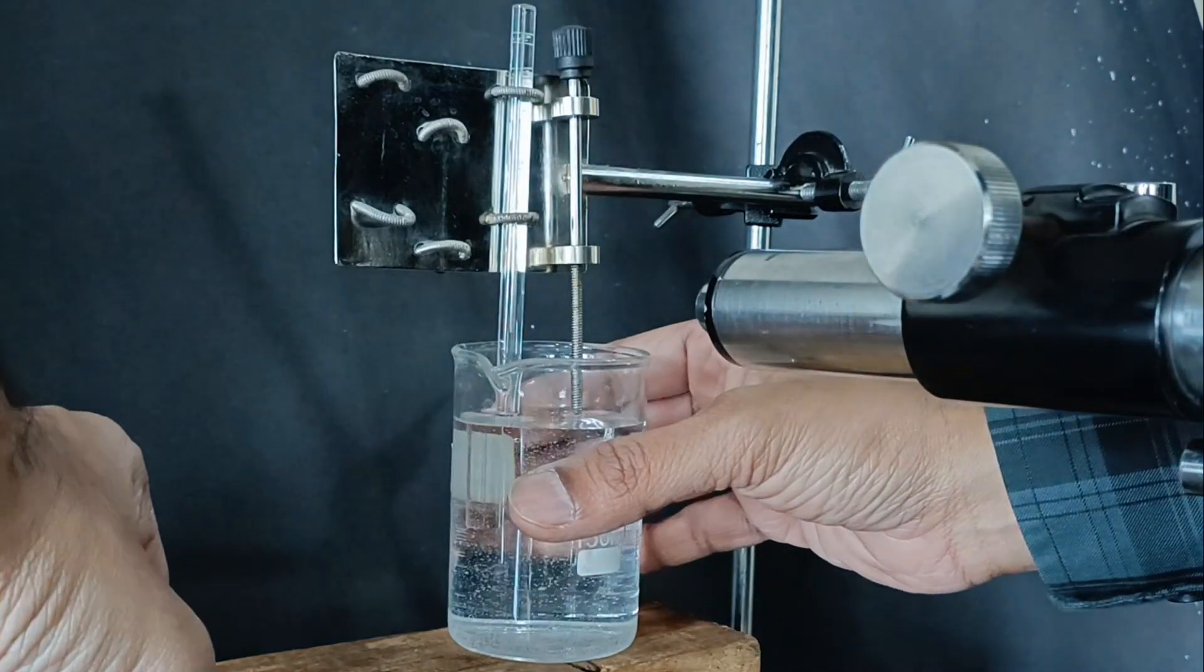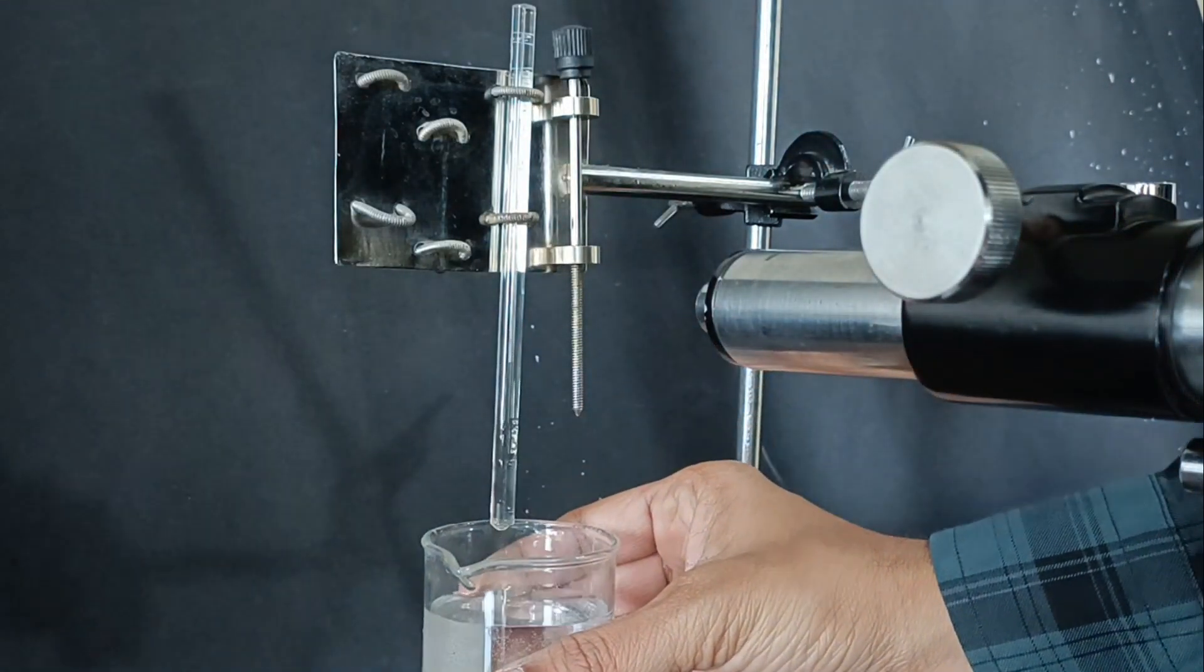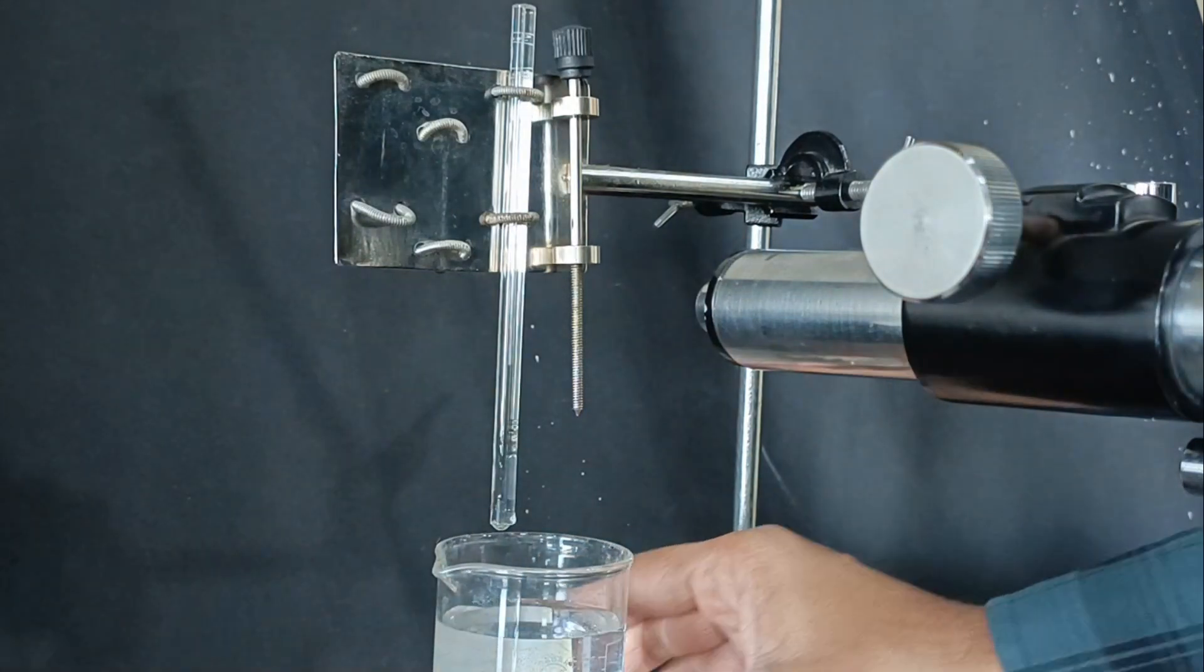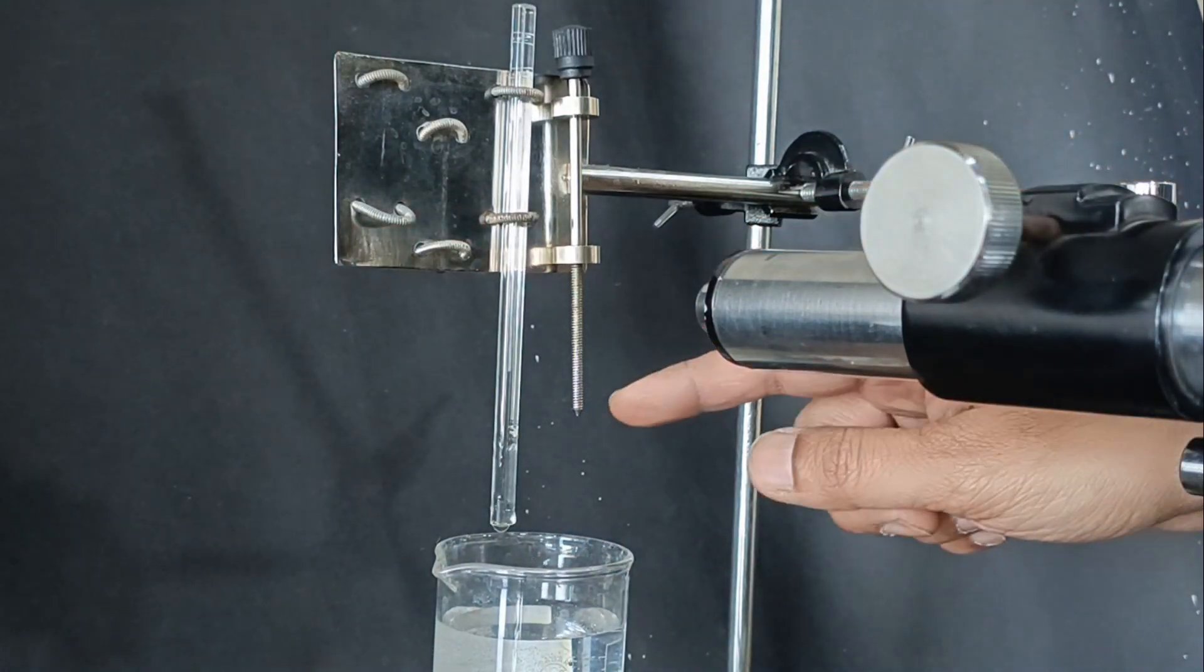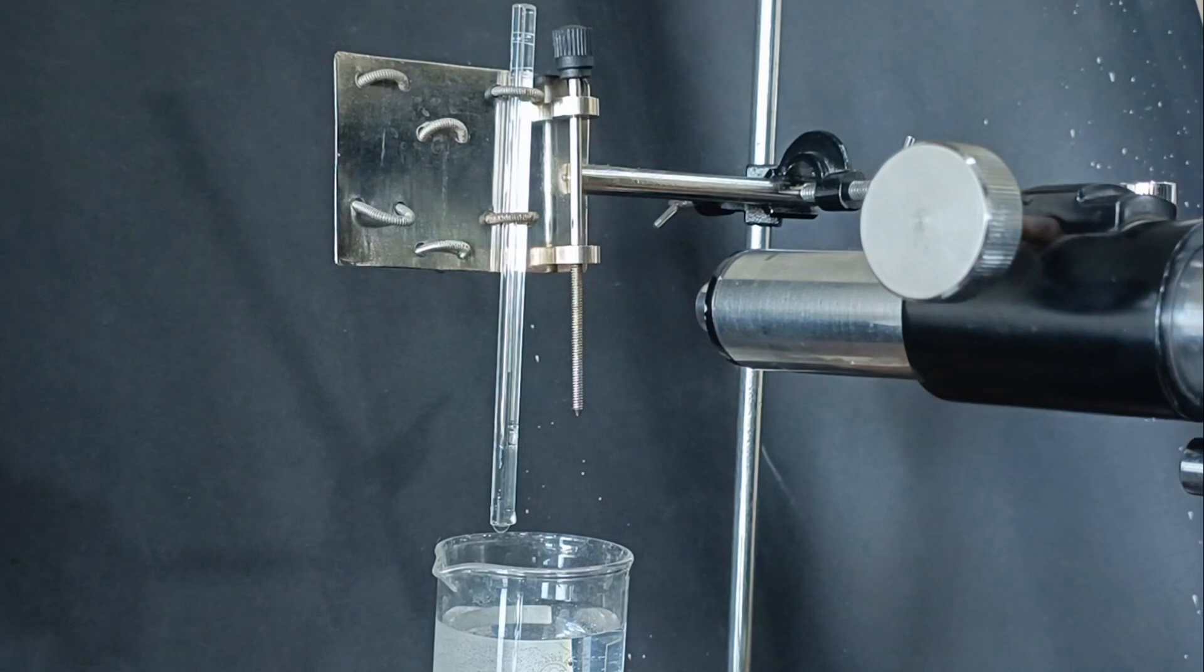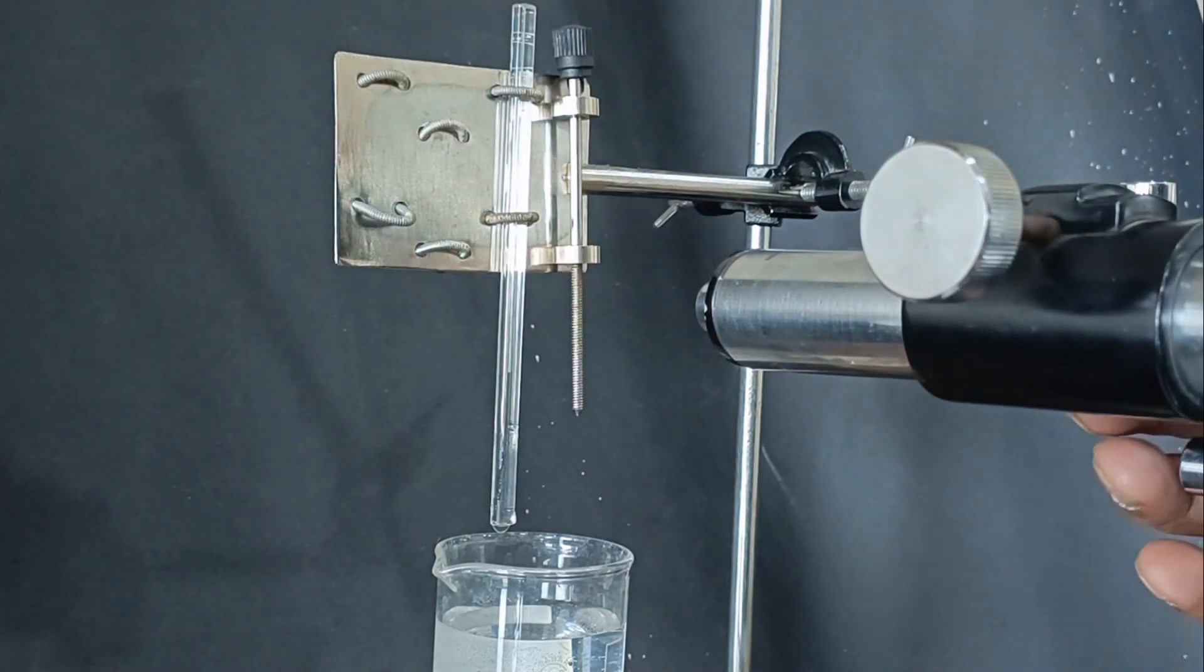Now lower the beaker by removing the wooden support. Let the capillary be out of the water. Now we will arrange the microscope with the tip of the needle and we will take the vertical vernier scale.